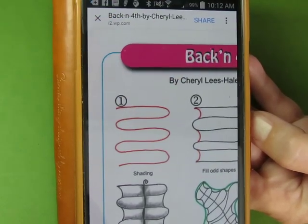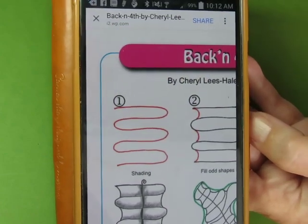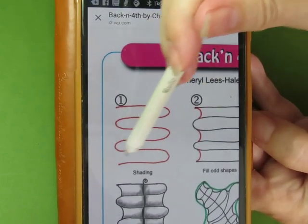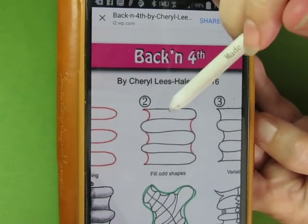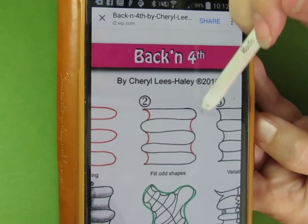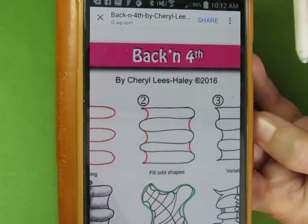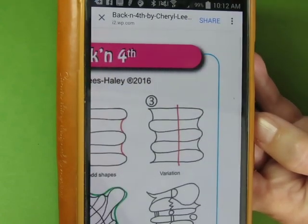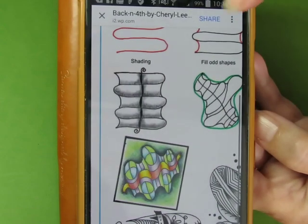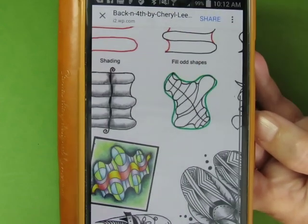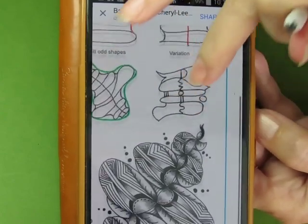You draw an alternating back and forth snake, you know, S-curve kind of a thing. Back and forth, back and forth. And then on the open end, opposite the curve, you draw this little curve bit. Simple. And then you put a line down the middle of it. And then you shade or embellish or you fill the odd shapes or you pattern inside. You use it like a string.